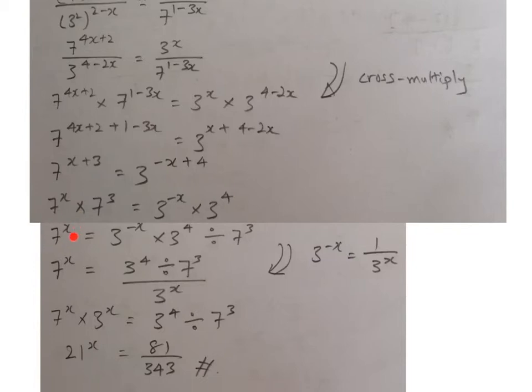Now I try to make 7 to the power of x my subject first. So I bring my 7 over 3 to the other side. From multiply, it becomes a divide. And bear in mind that 3 to the power of negative x over here is actually 1 over 3 to the power of x.